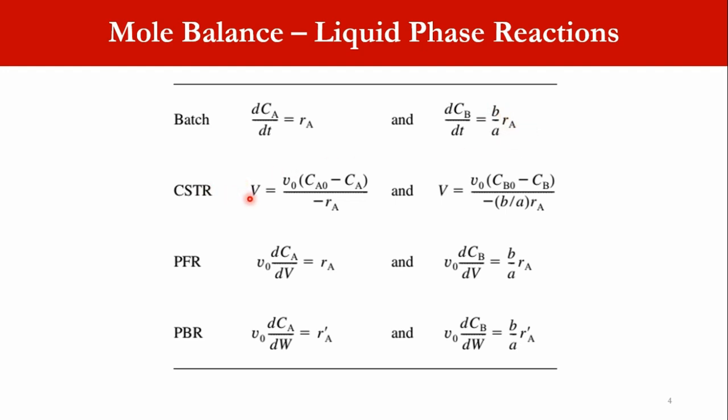In the same way for CSTR, V = V0, if we assume the volumetric flow rate is constant, (CA0 - CA)/(-rA), and for B species, V = V0·(CB0 - CB)/(-b/a·rA).